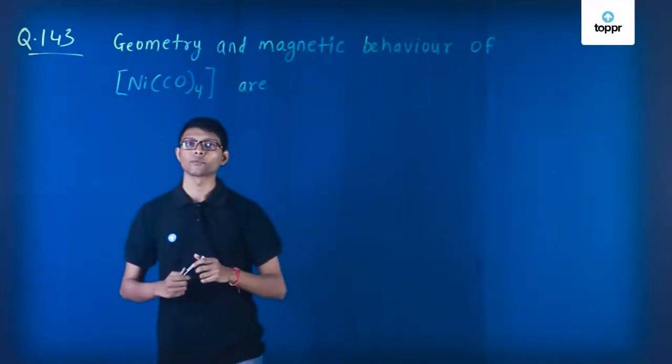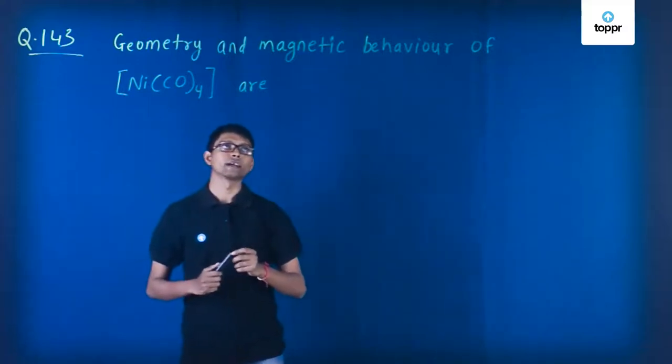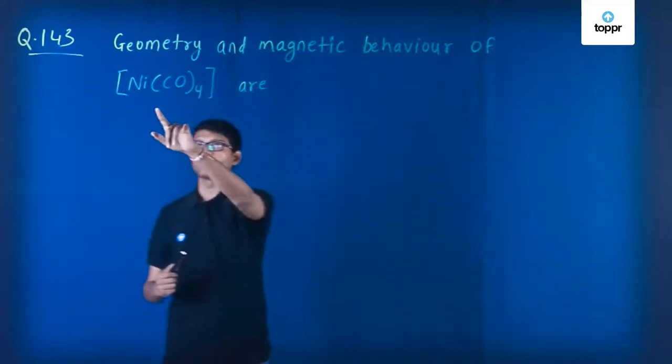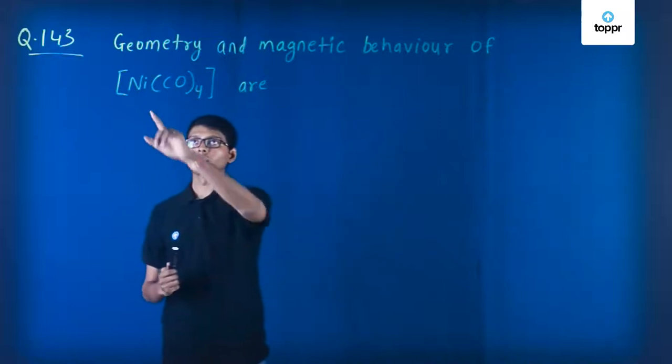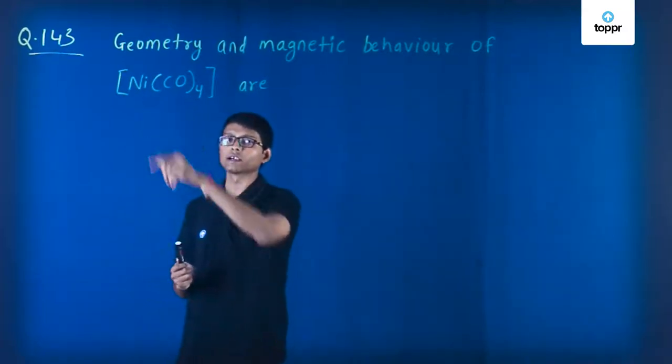This is question number 143 of the KNIT Paper. The question is what is the geometry and magnetic behavior of this compound? The compound is nickel carbonyl. So here carbonyl is a ligand and nickel is the metal.